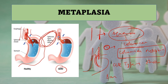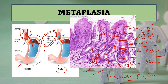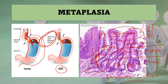Metaplasia is a change from one differentiated cell type to another. It can happen anywhere in the body - in epithelial tissue or mesenchymal tissue. In the lower end of esophagus, squamous becomes columnar epithelium - intestinal type epithelium with goblet cells - and we call this columnar metaplasia. This is what the biopsy is expected to show. Here you have squamous epithelium on one side and intestinal type epithelium with goblet cells on the other.